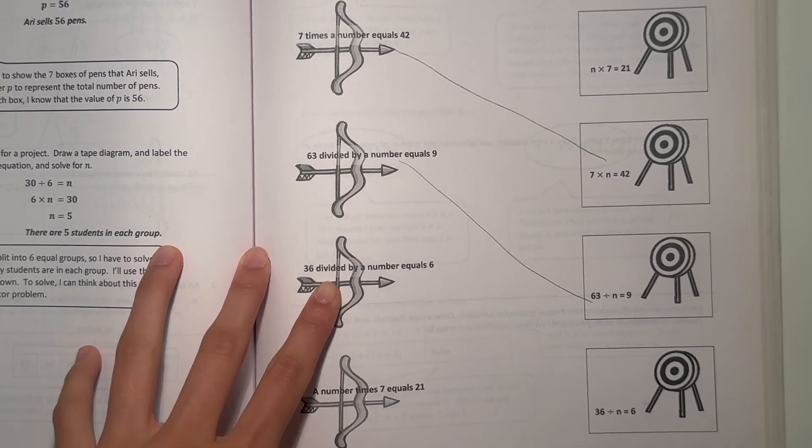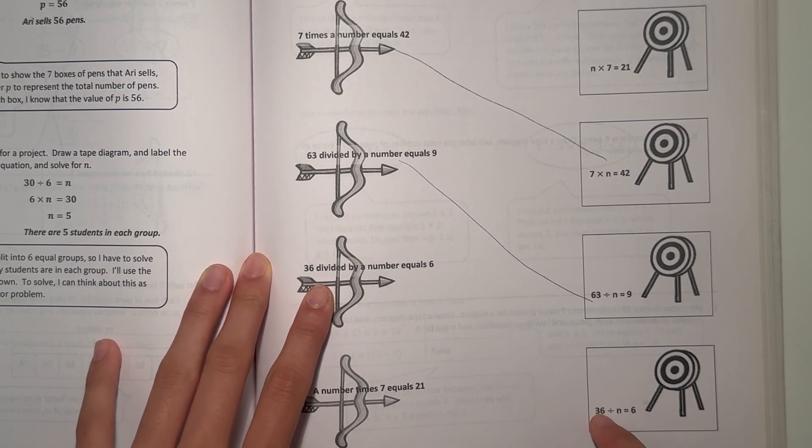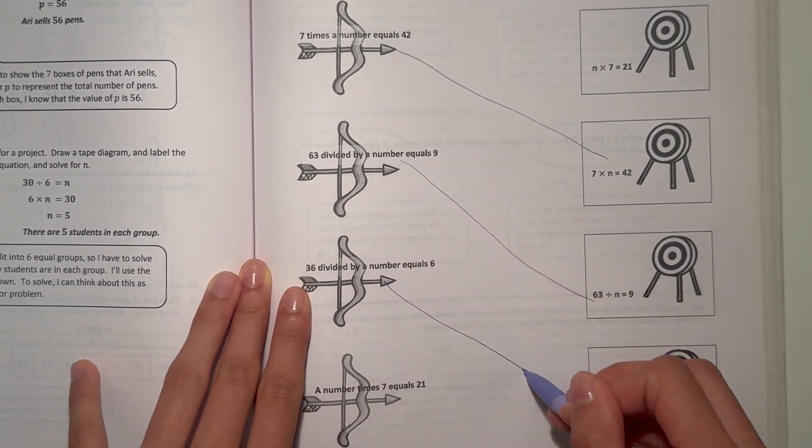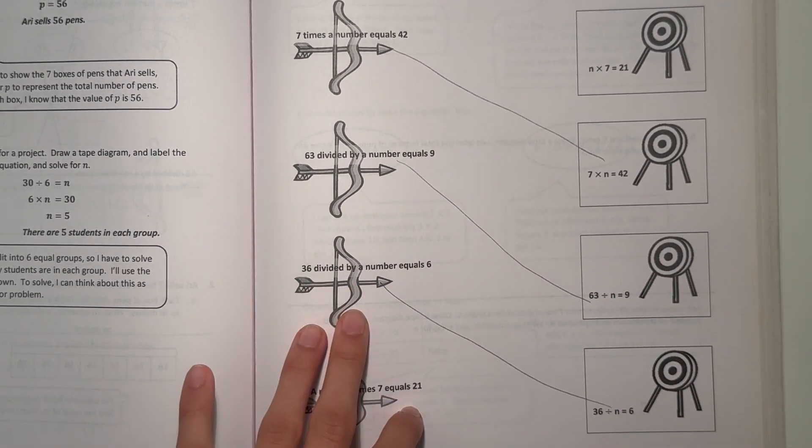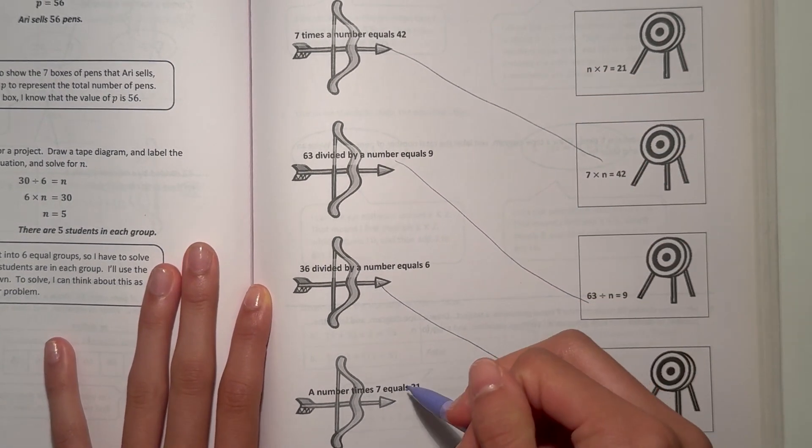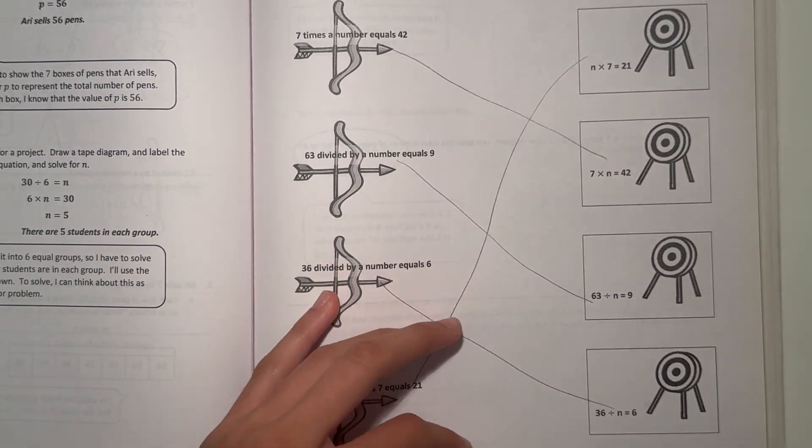Now 36 divided by a number equals 6. So this one matches because 36 divided by a number that we don't know equals 6. So this matches. And a number times 7 equals 21. We don't know this number, so it's n times 7 equals 21. Alright, next page.